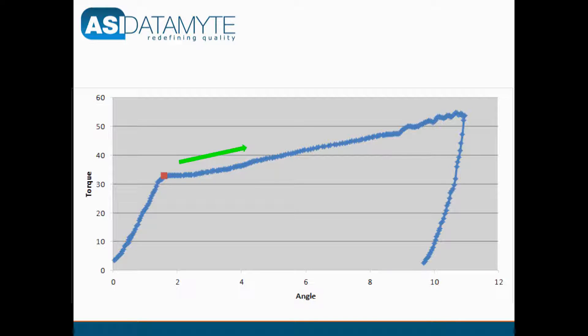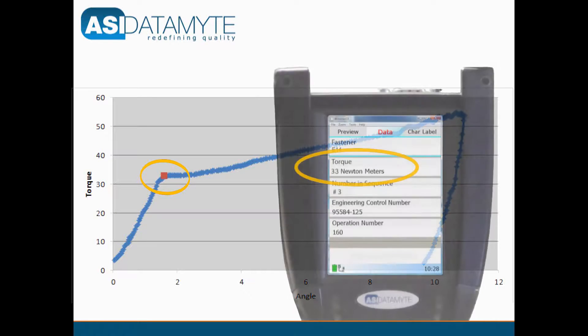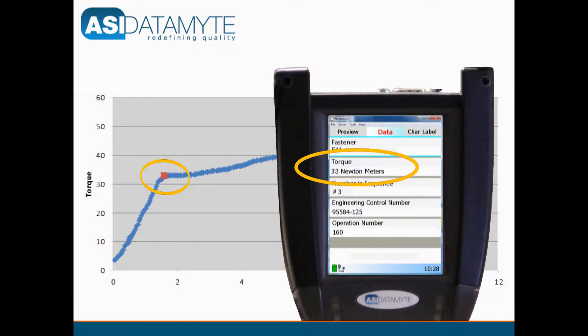The second leg of the curve shows actual fastener rotation starting at about 33 Newton meters with significant overshoot to about 54 Newton meters. The third leg of the curve shows relaxation as the wrench is released. Note that the red square on the curve indicates the restart value captured by the 600 data collector.